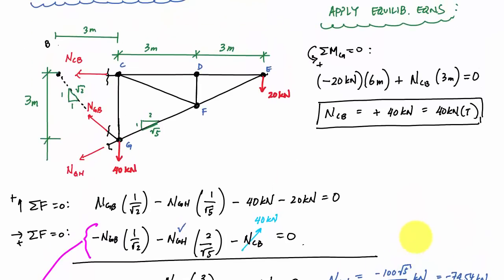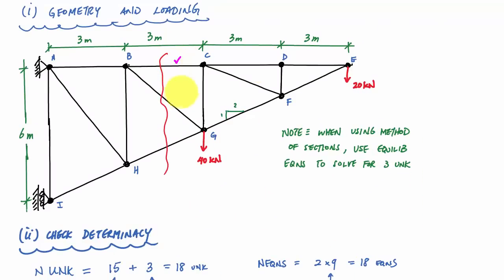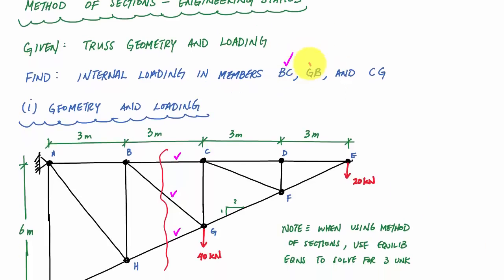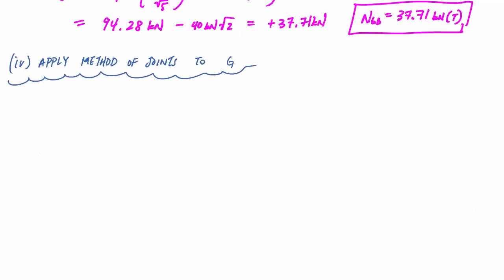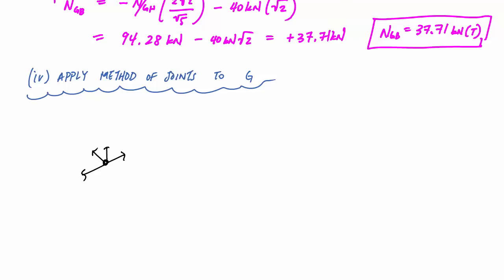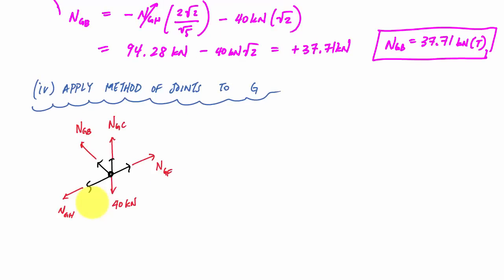So far I know the internal forces in members BC, BG, and GH. But the question also asks for CG. Looking at joint G, I know two of the forces framing into it, and there are only two other members. So I can use the method of joints on joint G to solve for the unknown force in CG.